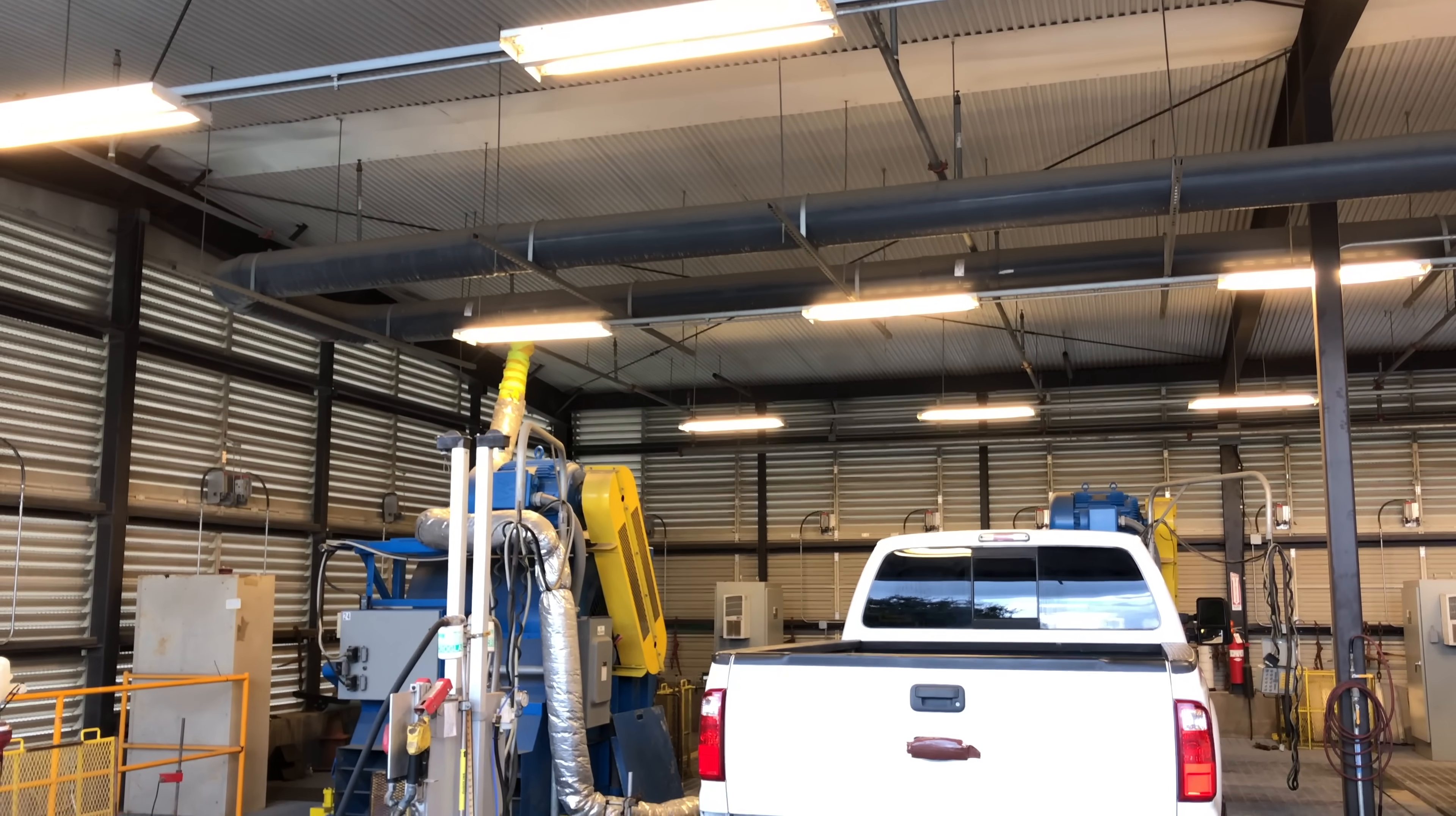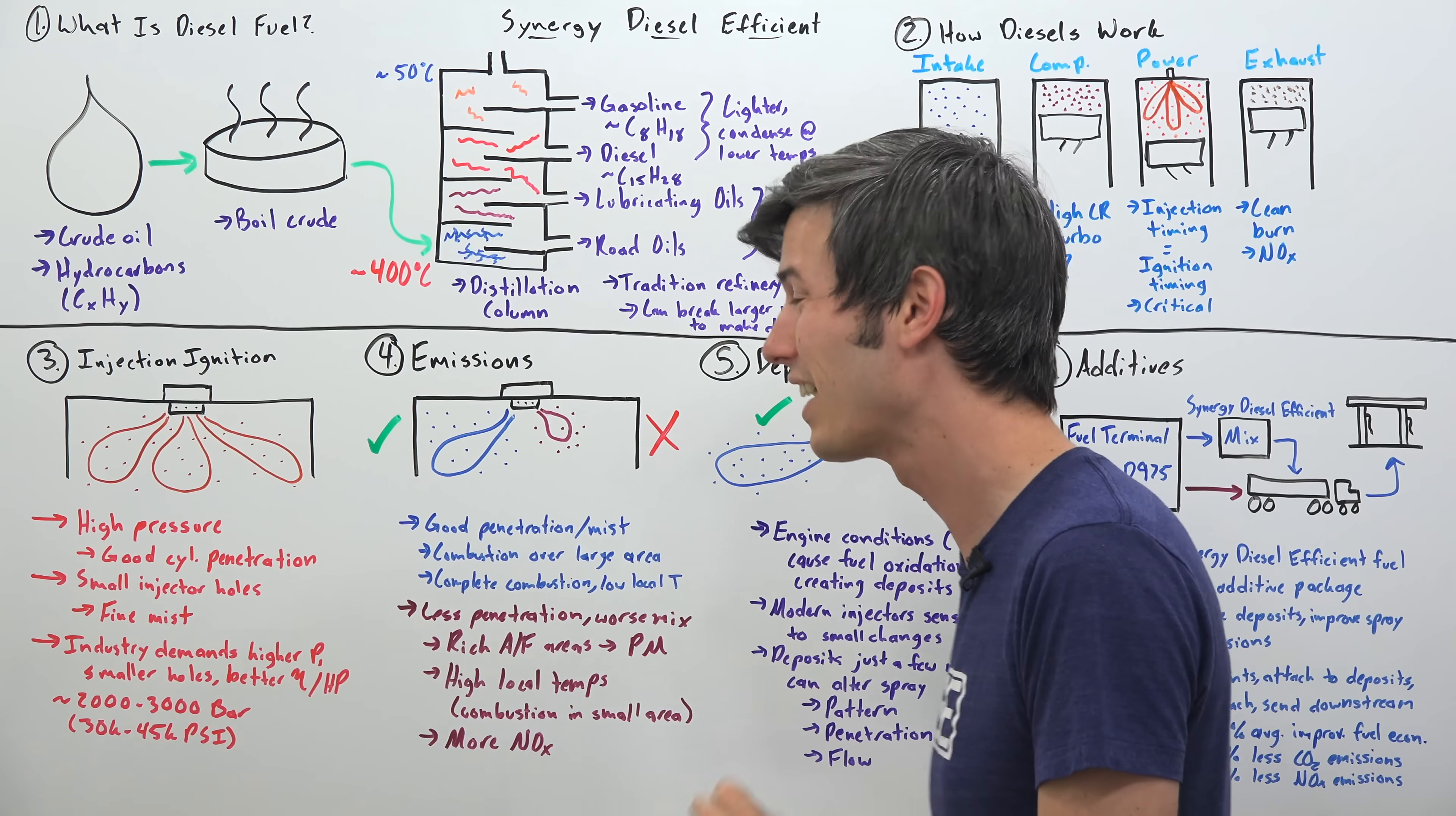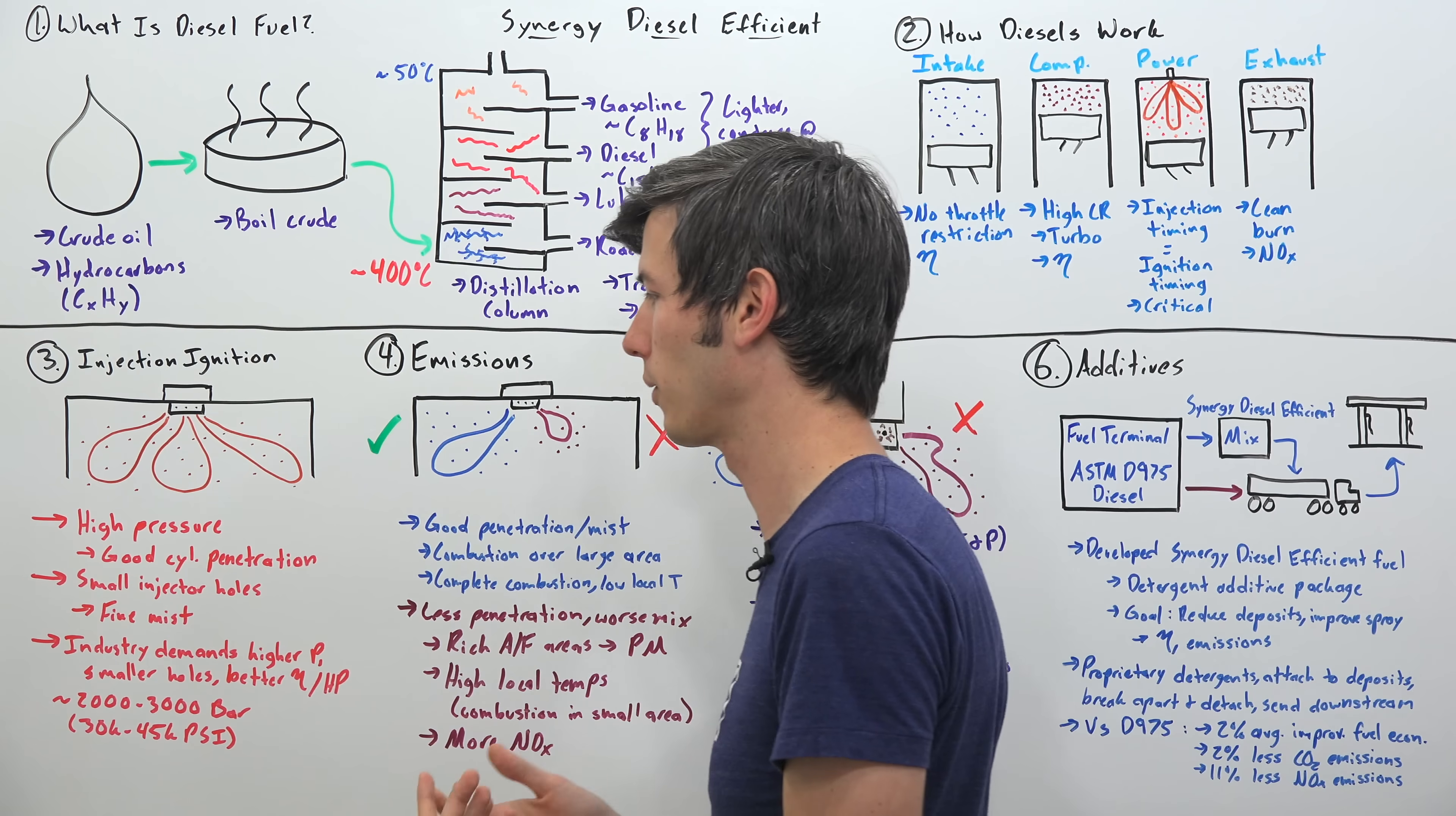Now I mentioned the importance of the injector, and so this is an area where modern diesels are really trying to improve. And two of the ways they're doing that are increasing the pressure, extremely high pressures, over 2,000 bar, looking towards potentially working in the 3,000 bar range, over 30,000 psi. So significantly, orders of magnitude higher than gasoline engines. And they're also looking to decrease the size of the holes used. And so the reasons for this, with that higher pressure, they're able to get better penetration within the cylinder, and spread out that fuel as wide as possible, as fast as possible.